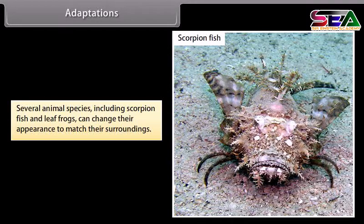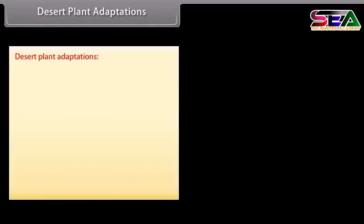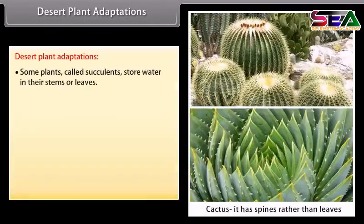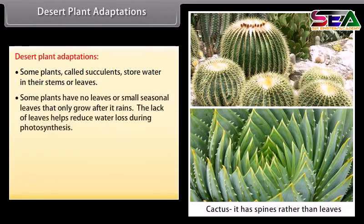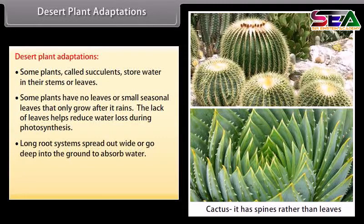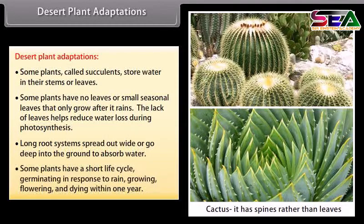Several animal species, including scorpion fish and leaf frogs, can change their appearance to match their surroundings. Some plants called succulents store water in their stems or leaves. Some plants have no leaves or small seasonal leaves that only grow after it rains, reducing water loss during photosynthesis. Long root systems spread out wide or go deep into the ground to absorb water. Some plants have a short life cycle, germinating in response to rain, growing, flowering and dying within one year.